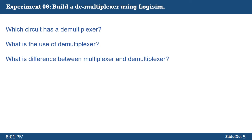The next question is: what is the use of a demultiplexer? A demultiplexer is used to connect a single source to multiple destinations. The main application area of demultiplexers is in communication systems, where multiplexers are also used. Most communication systems are bi-directional, meaning they function in both ways — transmitting and receiving signals.